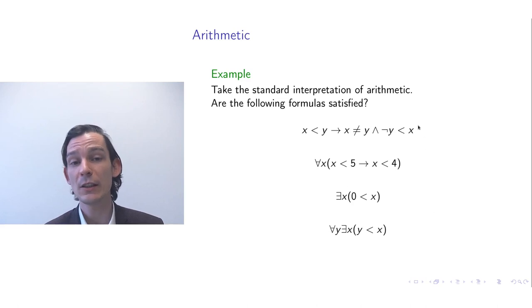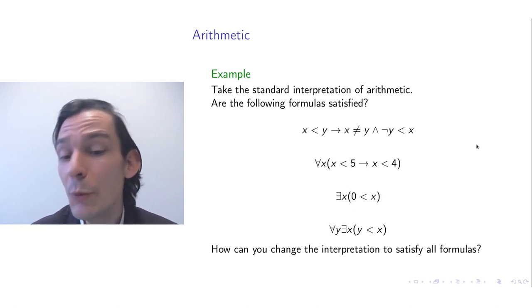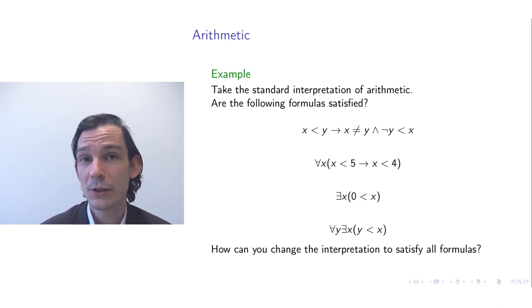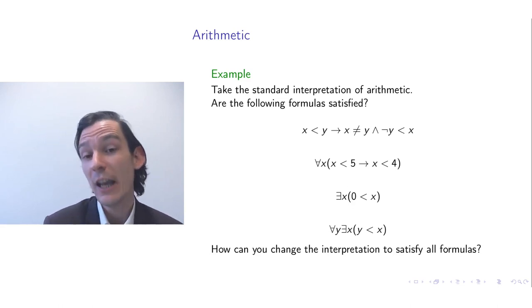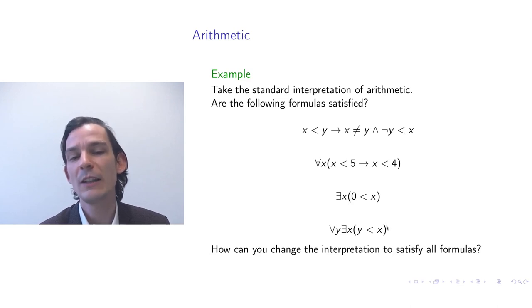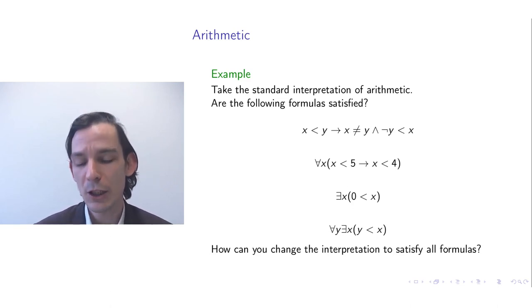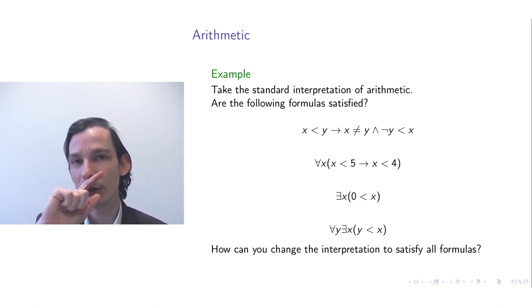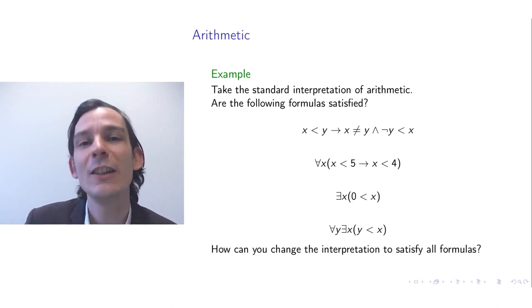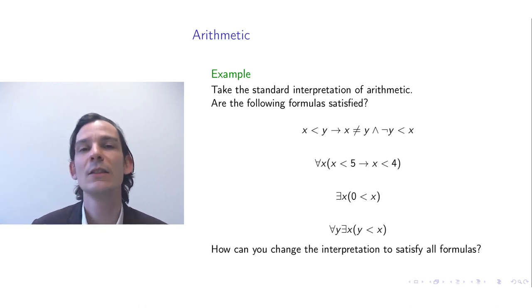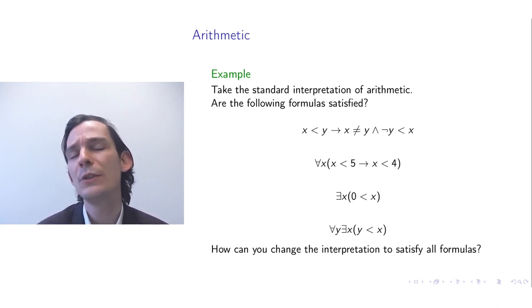We have seen that three of those formulas are satisfied but one is not. Can we change the interpretation so that all formulas are satisfied? We move away from the standard interpretation of arithmetic, intending to satisfy all these formulas. This is also how you should approach expert systems: you formulate facts in first-order logic, and the intention is that there must be an interpretation in which all those facts are satisfied.